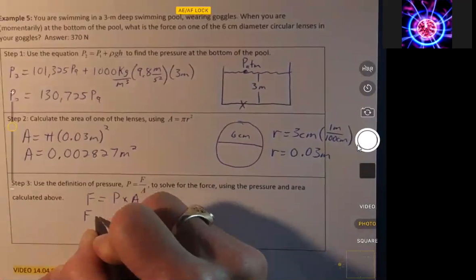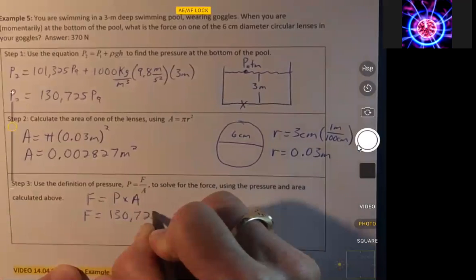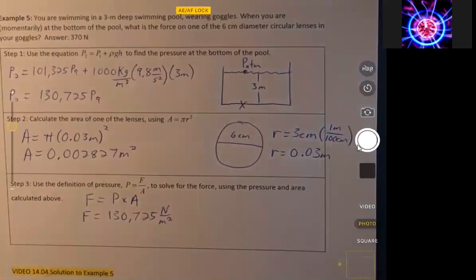so the force is equal to 130,725 pascals, which is the same as a newton per meter squared.